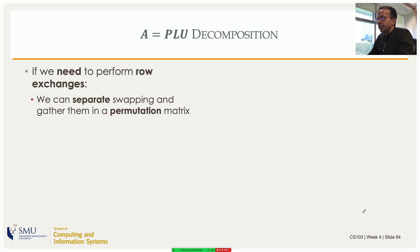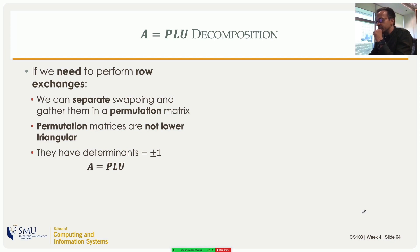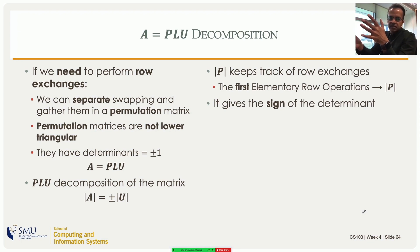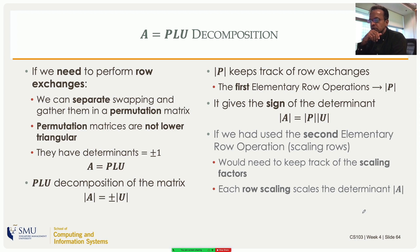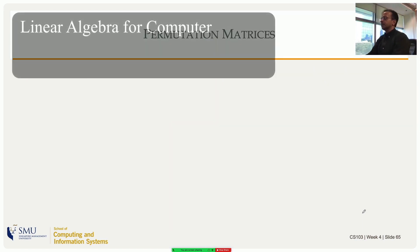If you also have row exchanges, things get more complicated because permutation matrices have determinants plus or minus one. However, you can always write A in the form P·L·U — a permutation matrix times a lower triangular times an upper triangular matrix. P keeps track of the row exchanges. If you also used the second type of elementary row operation (scaling), you'd need to track the scaling factor too. But for determinants, nobody uses the second row operation — it's not needed.